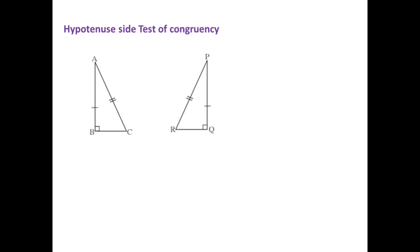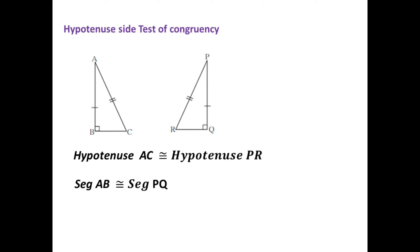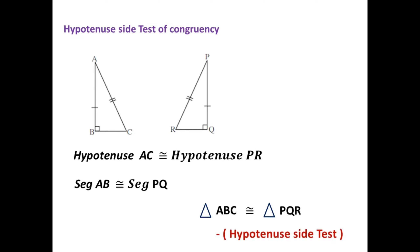There is another special test of congruency for two right-angled triangles — the Hypotenuse Side test. If two right-angled triangles have congruent hypotenuses and one other pair of corresponding sides also congruent, then those two triangles are congruent by the Hypotenuse Side test.